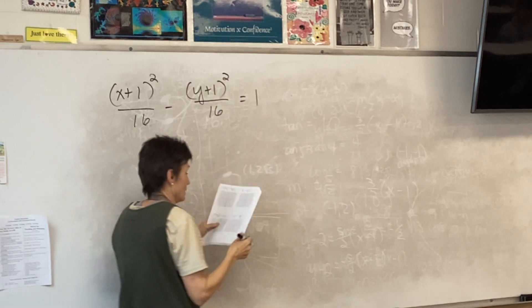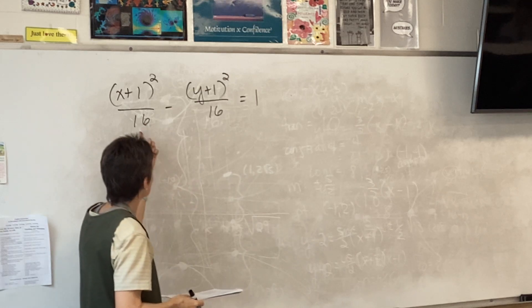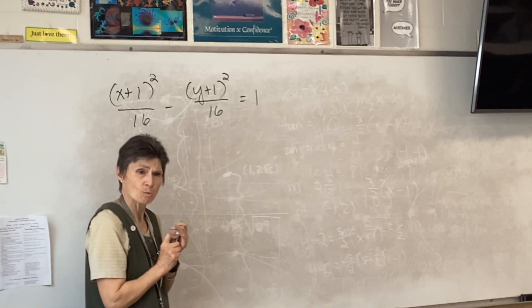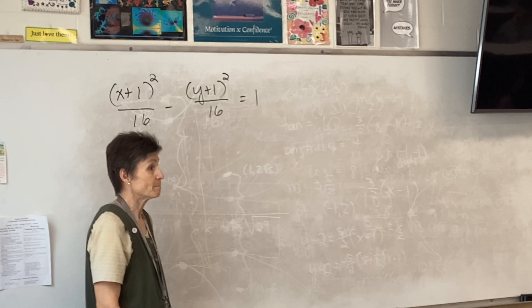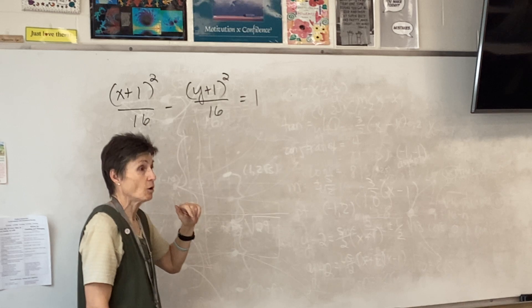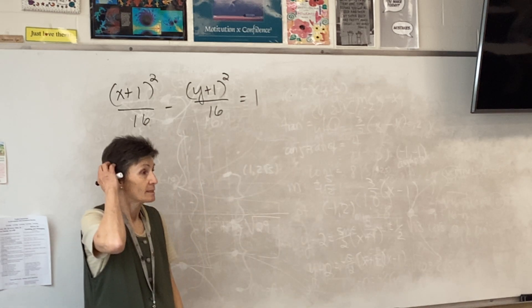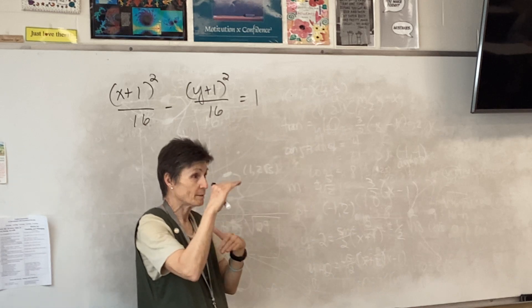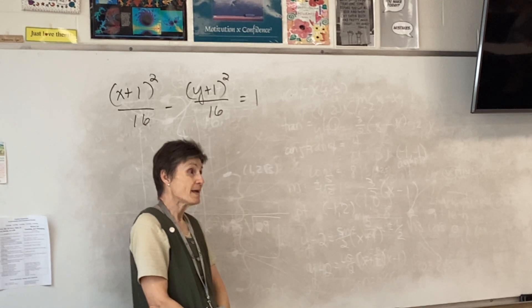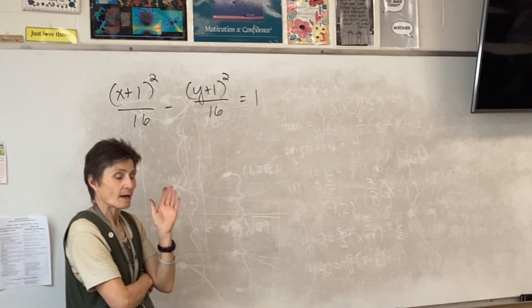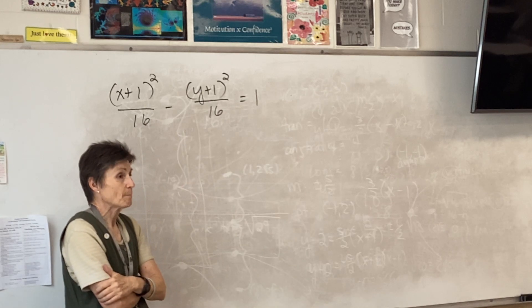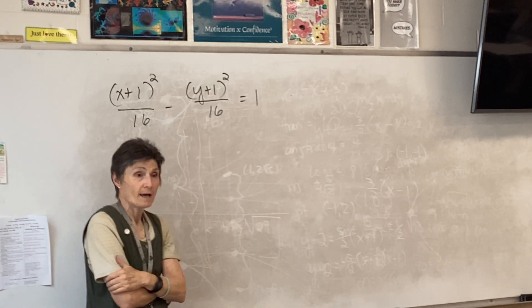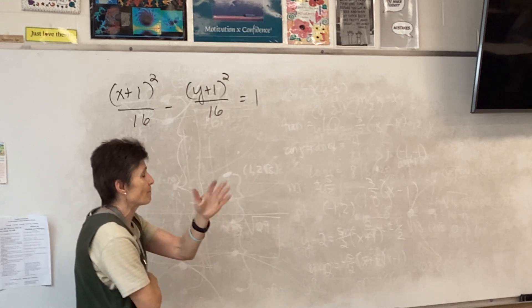What does it mean that those two numbers are the same? My box is going to be a square. And my asymptotes — what will the slope be? One. This kind of hyperbola actually has a name — it's called an equilateral hyperbola. Equilateral means the sides are the same, so the box is a square. These are the only hyperbolas with perpendicular asymptotes that haven't been rotated.